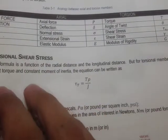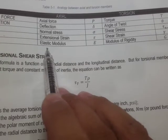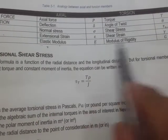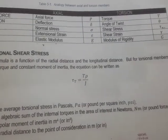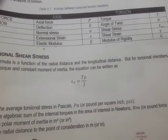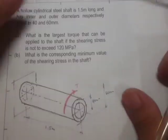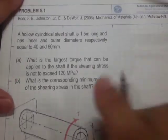For the modulus, for axial members that's elastic modulus E. But for torsional members, that's the modulus of rigidity, G. Now let's start our first sample problem for torsion.